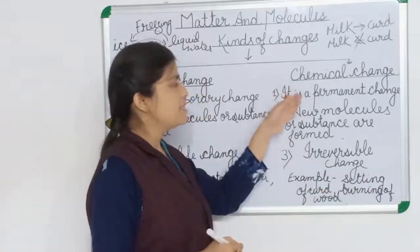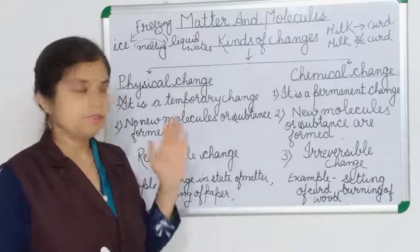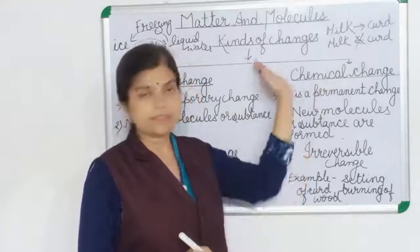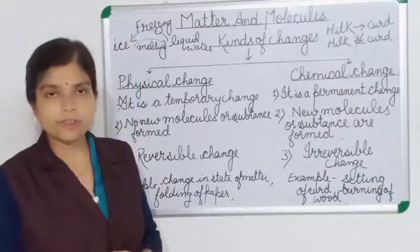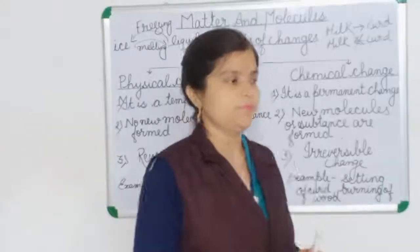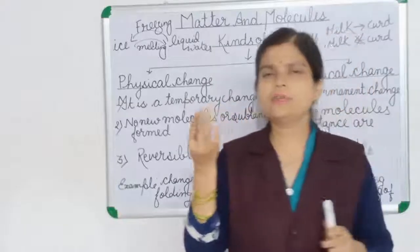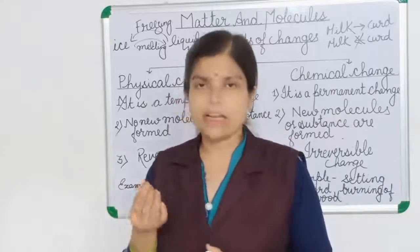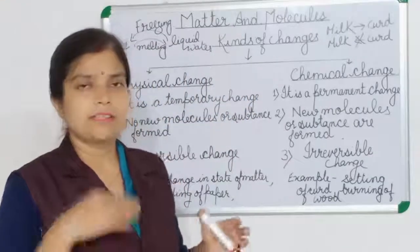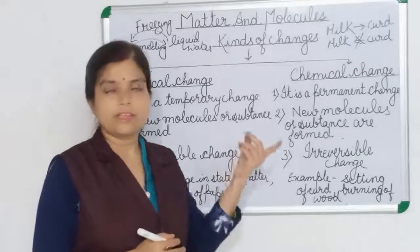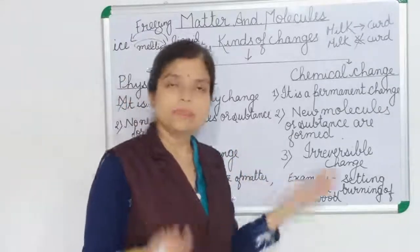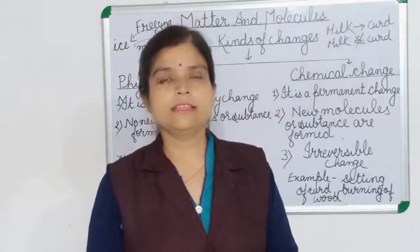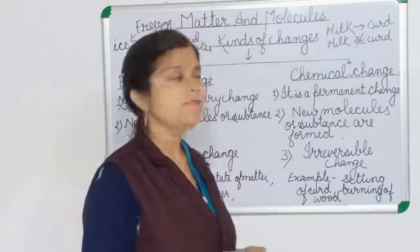Chemical change is a permanent change, new molecules or substances are formed, and it is irreversible. Another example is burning — burn a matchstick and after burning, you will not get back the same matchstick; it converts into smoke and ash. Burning of wood, burning of paper, burning of crackers — these are common examples of chemical change.